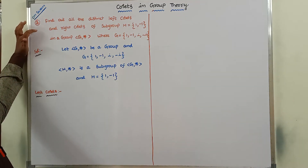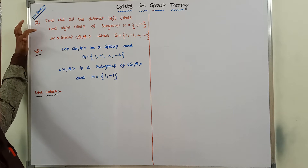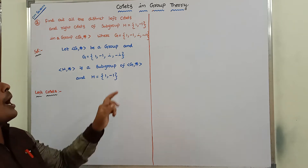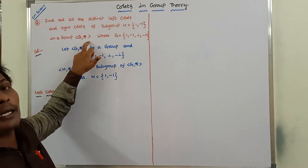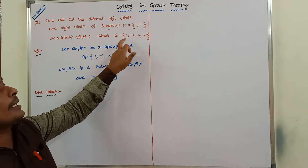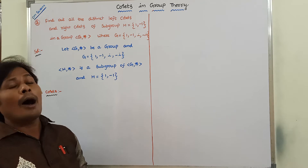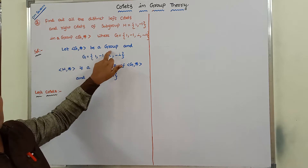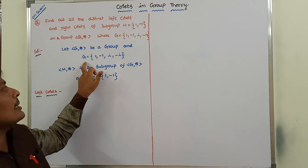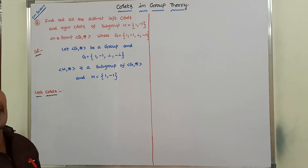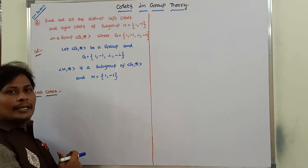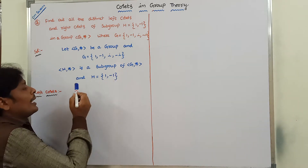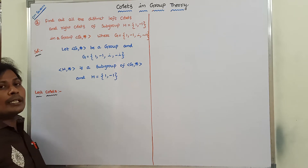Find out all distinct left co-sets and right co-sets of subgroup H = {1, -1} in a group (G, *), where G = {1, -1, i, -i}. So, let (G, *) be a group and G is defined as {1, -1, i, -i}. (H, *) is a subgroup of (G, *) and H is defined as {1, -1}. This is the given data in the above problem.